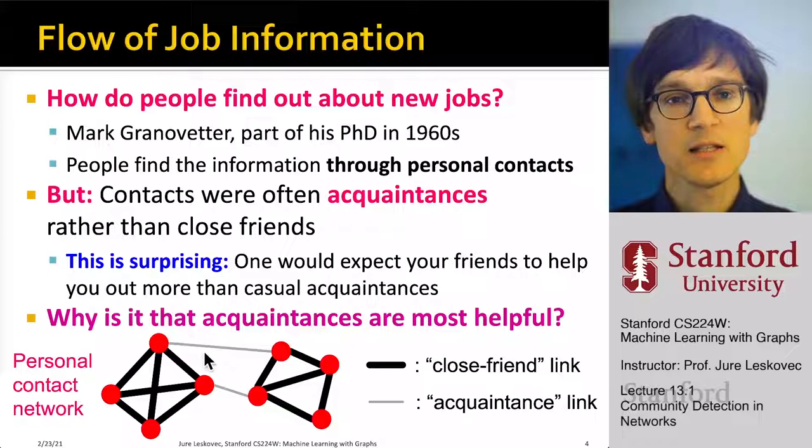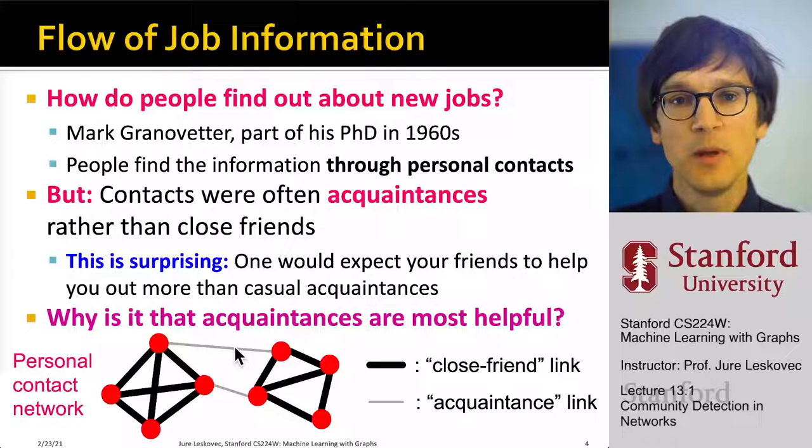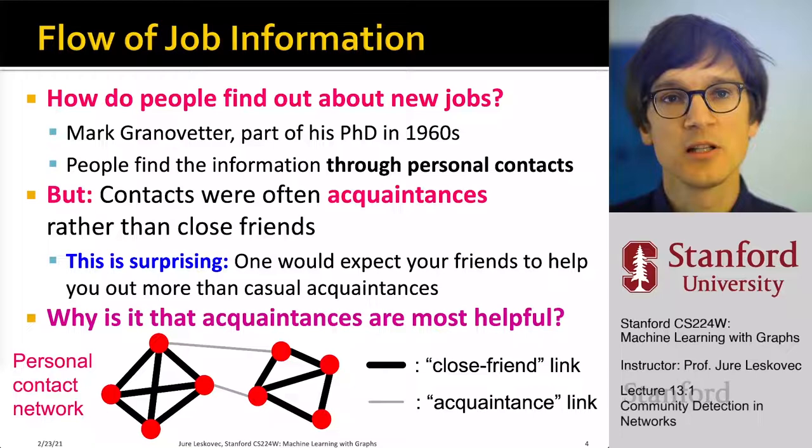Going back to the picture we had before, it was these acquaintance links — these weak links — that were the ones through which people heard about jobs, and not necessarily the strong interpersonal links. So acquaintances were more helpful in this process. The question was why.